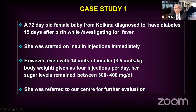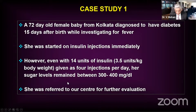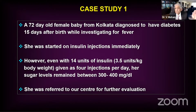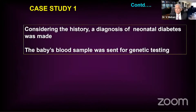Let me give you two actual case studies — both from West Bengal. The first is a 72-day-old female baby diagnosed with diabetes 15 days after birth. She had a fever, blood sugar was very high, and was started on insulin — 14 units, 3.5 units per kg body weight in four injections per day. Blood sugar remained between 300 to 400 and was not coming down, so she was referred to our center. I now recommend: any child below six months, please send them to us for genetic testing — we'll do it free of cost.